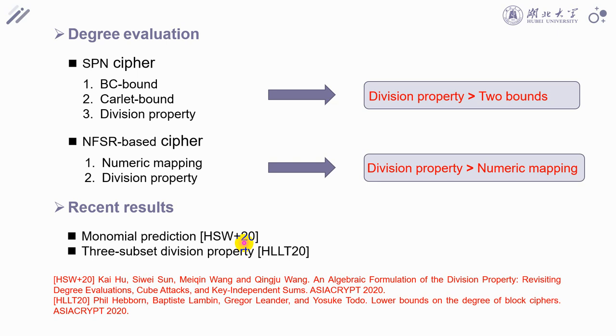Therefore, for a symmetric cipher, if you expected to explore some special optimization strategies to get the exact degree, you can consider the monomial prediction for three-subset division property methods. But if you only want to have the overview on the degree of this cipher, the two-subset division property methods will be the best choice.